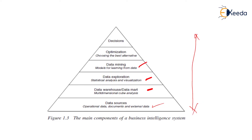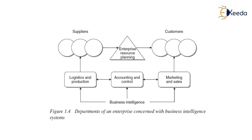The fourth level is data mining, where we deal with models for learning from the data. The fifth level is optimization, where we search for different alternatives — if one approach is not feasible, another can be explored. Finally, the topmost layer delivers the perfect decision, which we can make using business intelligence. This pyramid is followed while designing a BI model.